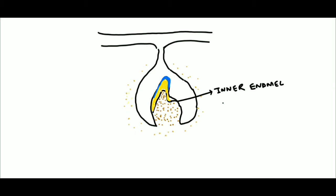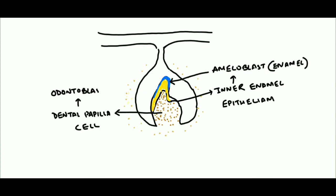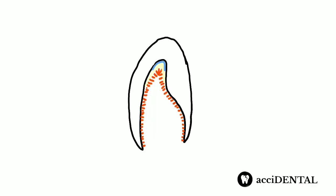After cusp formation, the inner enamel epithelial cells and dental papilla cells continue to differentiate into ameloblasts and odontoblasts respectively, thereby forming enamel and dentin.